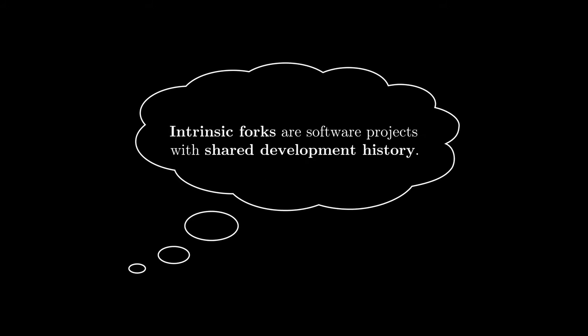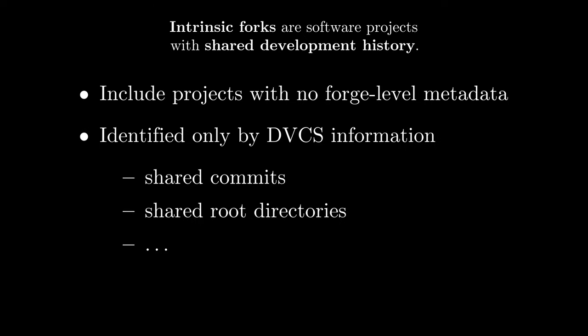So, the main idea behind this work is this: what if we use software artifacts that are intrinsic to the repositories to establish a more robust way of identifying forks? We can look at the contents of the different repositories and see if they share some amount of development history to determine whether they are forks of each other. Put simply, if two repositories share the same commit or the same root directory, we can classify them as forks, which would get around the methodological problems of using forge-level metadata.